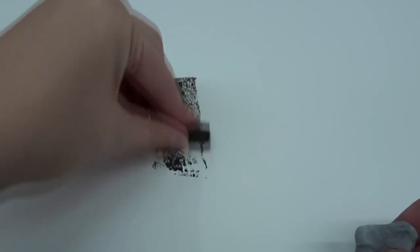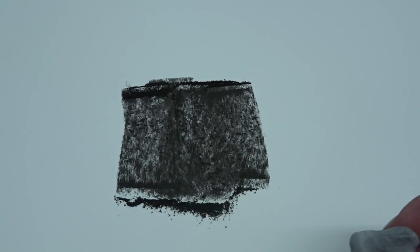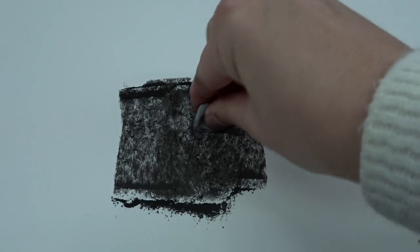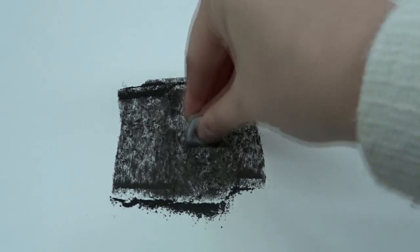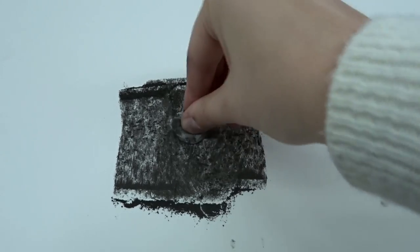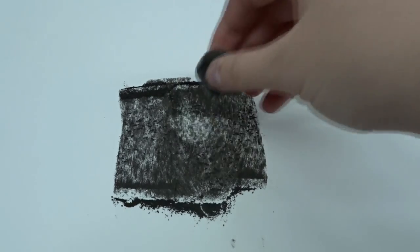Let's say we've got something like that. So one way to use the kneaded eraser is to use the dabbing method. You can see it's getting all dirty, but you can also see that it's lifting up the charcoal off the page.